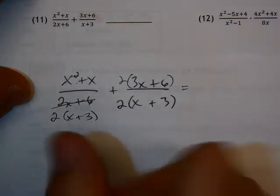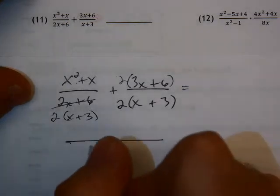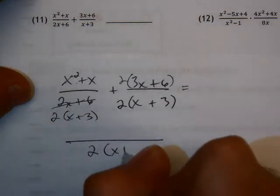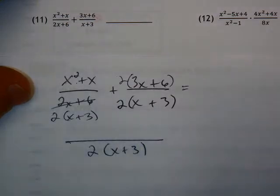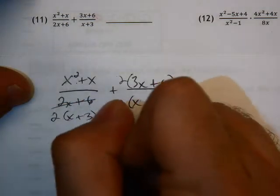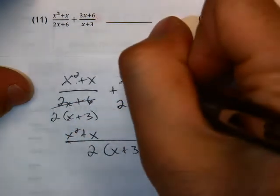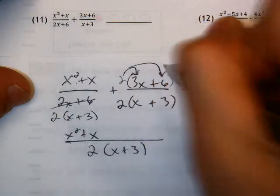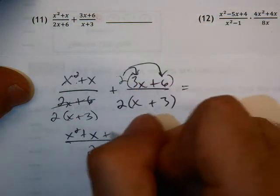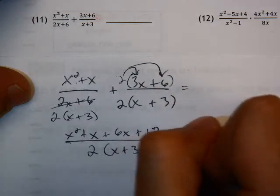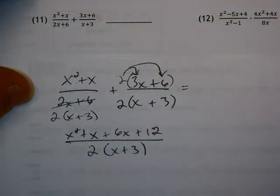So now when I'm adding these fractions, I'm going to have my common denominator, which is 2 times the quantity of x plus 3. And on the top, I'm going to have x squared plus x. And then I'm going to distribute the 2: 2 times 3x is 6x, 2 times 6 is 12. Now from here, it's a matter of simplifying as much as I can.